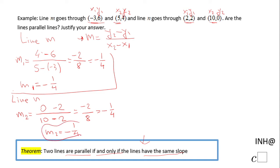At this moment we look at these two slopes and notice they are the same - we have the same slope. So now we can say line m is parallel to line n because, and that is the justification, the slopes are the same: -1/4.